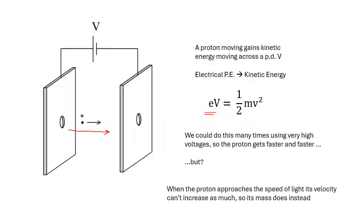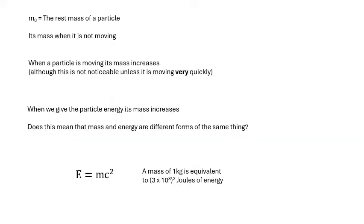When the proton approaches the speed of light, we can't make its velocity any bigger. So what happens? We give it kinetic energy, and if its velocity can't get bigger, then its mass has to get bigger. Its velocity can't get bigger, so its mass has to get bigger.